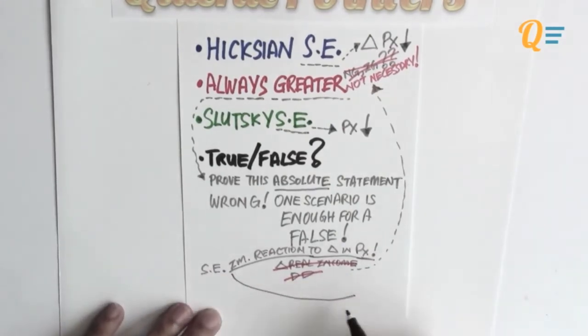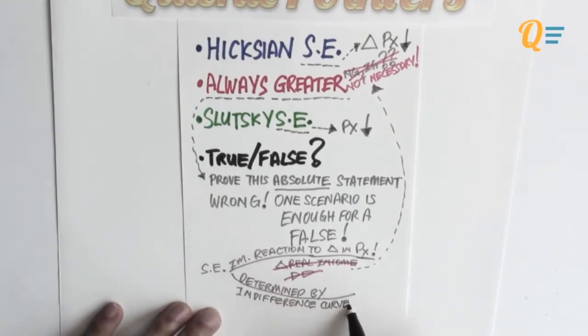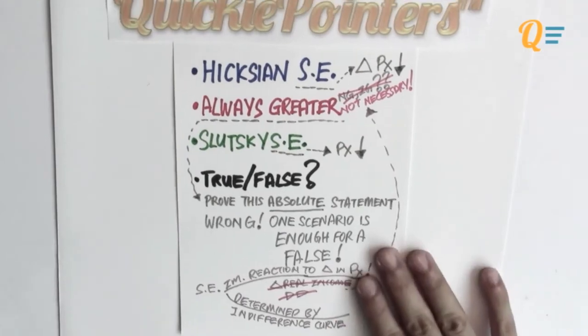Okay, so the SE is determined by the indifference curve. So let's take a look at how we're going to approach this question.